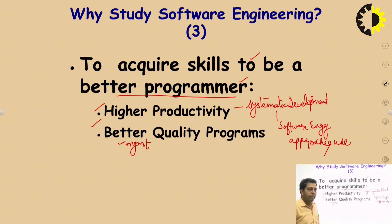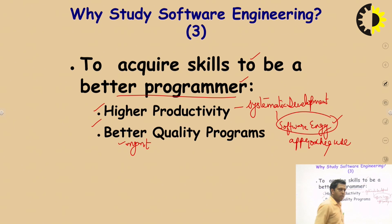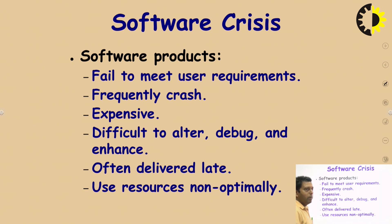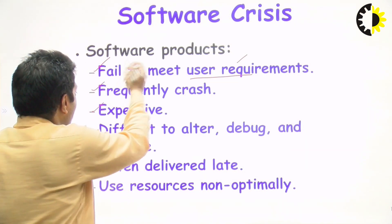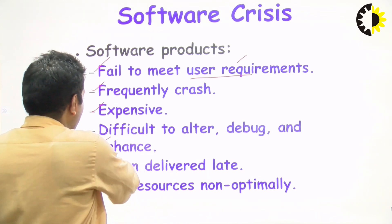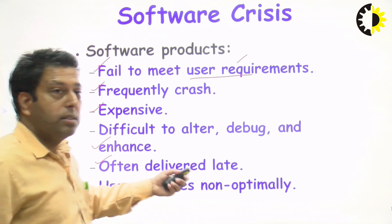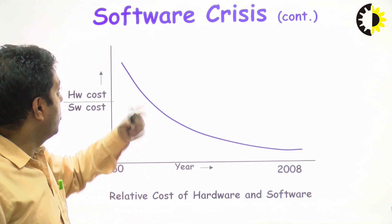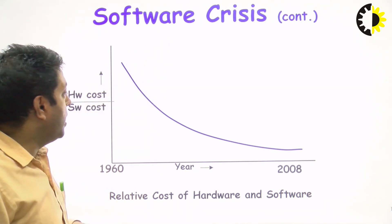Let's proceed to the topic of software crisis. When requirements are not available in the market, software fails to meet users' requirements, becomes expensive to debug and alter, and resources are not optimally utilized. Due to shortage of time, we will continue with the software crisis topic in the next class.